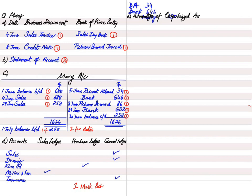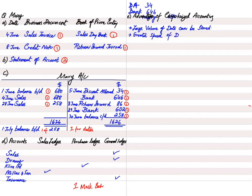The last part of the question asks for advantages of computerized accounting. There are two methods: manual accounting using pen and paper, and computerized accounting using computers and software. The first advantage is that a large volume of data can be processed and stored — for example, a small flash drive (USB) can store many gigabytes of data.